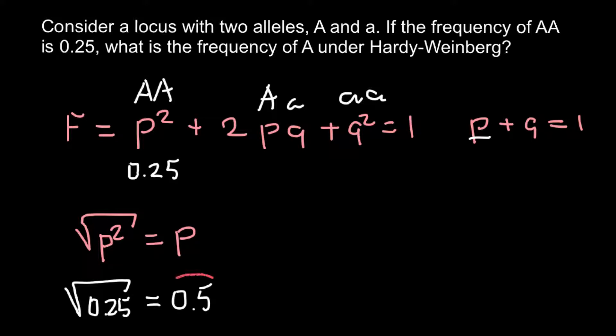But if you want to check if my answer is correct, let's verify. So frequency of p equals 0.5. That means the frequency of the q allele—by the way, this is dominant allele A and this is recessive allele a—so it is very clear that frequency of the q allele also would be 0.5. So 0.5 plus 0.5 and we would get 1.